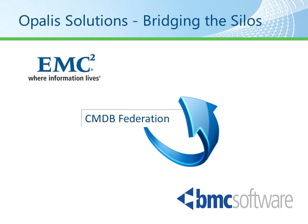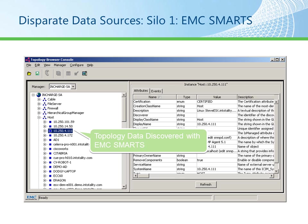The first Opalis solution for bridging the silos we're going to look at is CMDB Federation between EMC and BMC. While I don't have the actual VMs or software, I do have screenshots from an existing solution. The first silo we're going to look at is from EMC Smarts, one of our disparate data sources. We have a screenshot from the topology browser console and we can see an IP address — a topology that was discovered with EMC Smarts. This IP address and associated information will be needed in the CMDB, and we're going to get it there using Opalis.